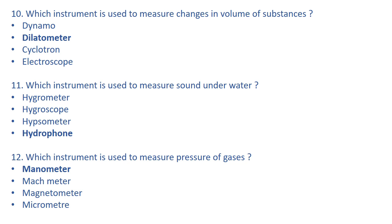Hygrometer is an instrument used to measure the level of humidity. Hygroscope is an instrument used to show changes in atmospheric humidity. Hypsometer is an instrument used to determine the boiling point of a liquid. Let's come to the next one.